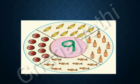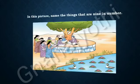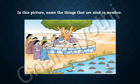Now let us learn about 9. N-I-N-E, 9. In this picture, we can see the things which are 9 in number. Look at this picture, students, and name the things that are 9 in number. Here we can see 9 peoples, 9 flowers.